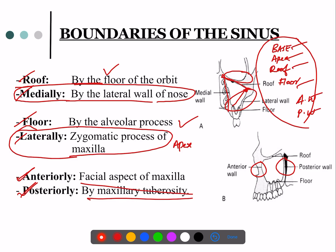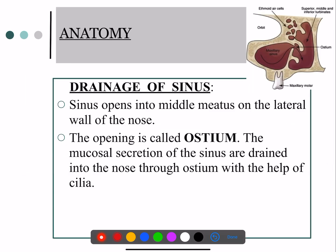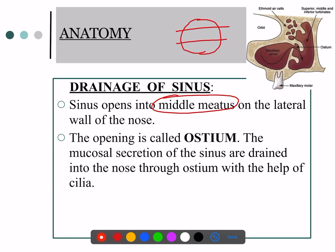The natural opening of the maxillary sinus — the ostium — is present in the middle meatus. Because of this high position, any accumulated fluid cannot drain easily; it must fill up to that level to exit. Therefore, when performing an antrostomy or creating an artificial drainage hole, it is made in the inferior meatus for easy drainage. Natural opening is in the middle meatus; artificial opening is in the inferior meatus.